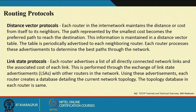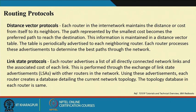In link state, one approach is more localized with neighbor info, whereas here it has a global picture. In path vector, which is somewhat similar to distance vector but not exactly, we have the destination, distance to the destination, and the path to reach the destination. When we discuss BGP, we will see that it maintains the ordered set of autonomous systems a router needs to pass through to reach a particular destination in inter-domain routing.